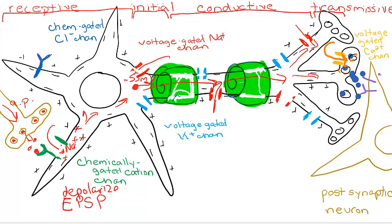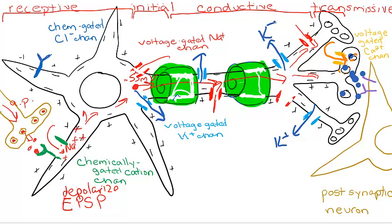Right behind all of that sodium diffusing in, once we hit positive 30 millivolts, that's when potassium diffuses out — right behind that sodium. That's going to repolarize our cell, taking us back down to negative 70 millivolts — and then some, because remember we overshoot. The potassium channels close when we're hyperpolarized, and it brings us back to our starting resting membrane potential.